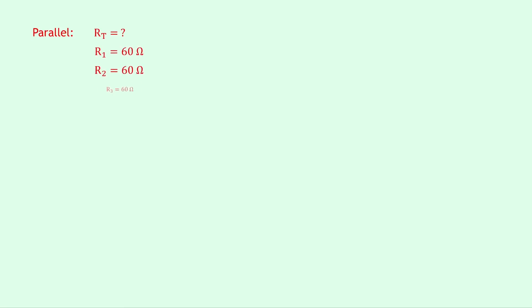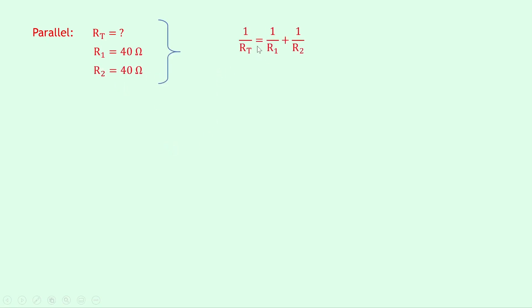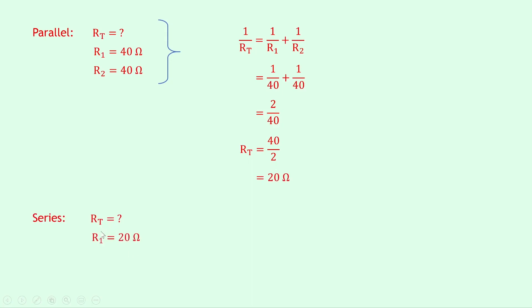Now let's prove that by using the equations. For the first parallel combination of the 60 ohm resistors, we have R1, R2, and R3 each equal to 60 ohms. So 1 over RT equals 1 over R1 plus 1 over R2 plus 1 over R3. Substituting in the numbers gives 1 over 60 plus 1 over 60 plus 1 over 60, which gives 3 over 60. Flipping both sides gives RT equals 60 over 3, which equals 20 ohms. For the second parallel combination, R1 is 40 ohms and R2 is 40 ohms. So 1 over RT equals 1 over 40 plus 1 over 40, which equals 2 over 40. Flipping both sides gives RT equals 40 over 2, which equals 20 ohms. Lastly, for the series combination, RT equals R1 plus R2 equals 20 plus 20, which gives a final answer of 40 ohms, as expected.